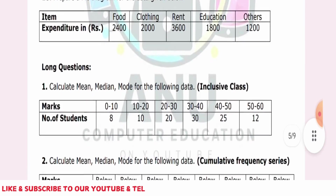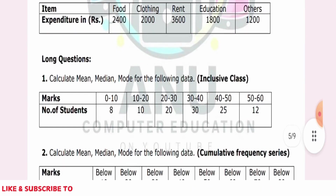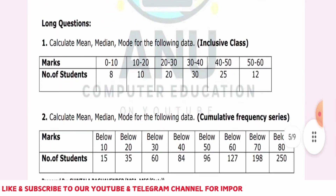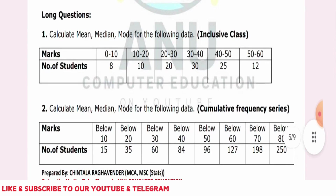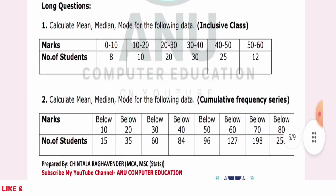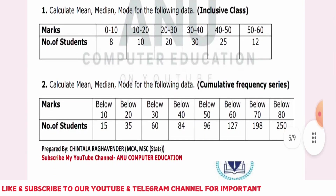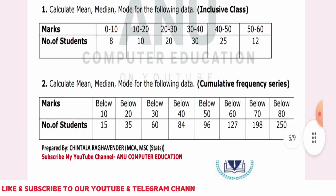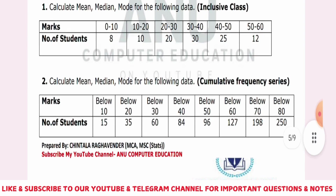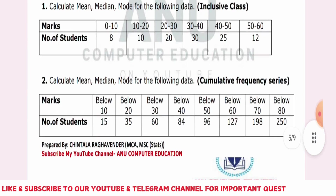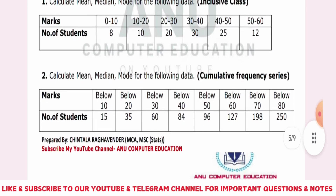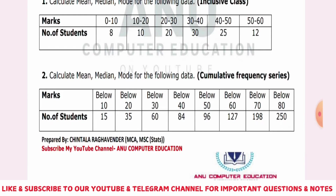Inclusive and exclusive is very important. 0 to 10, 10 to 20 is exclusive — not inclusive. If you have a question number 1, we will do the class intervals. But the second question has class intervals below 10, 10 to 20, 20 to 30. This is not a discrete problem and not a continuous problem — we will do the class intervals.